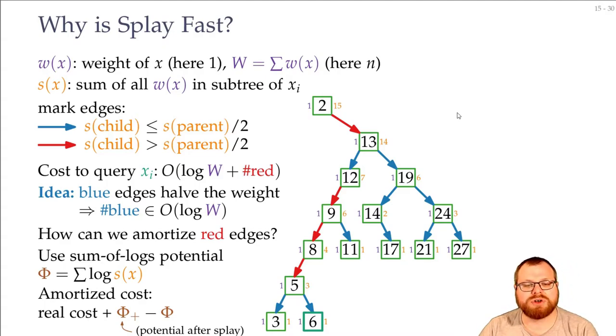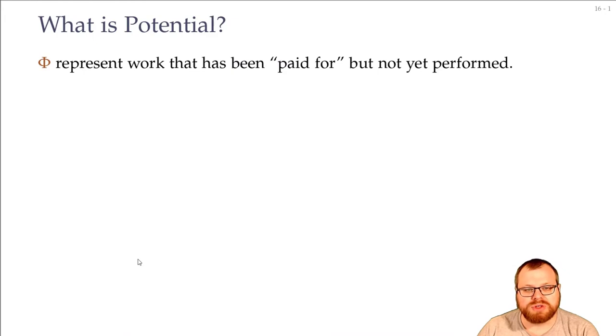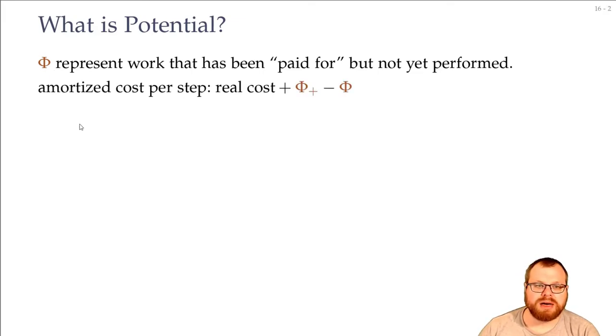So if you haven't heard of potential functions before, or it has been a long time, this might be a bit confusing. So let's have a look at a smaller, more intuitive example before. So this potential function represents work that has been paid for, but not yet performed. And the amortized cost per step is just the real cost, plus the change in the potential. So whenever we pay a lot, but the potential goes down, then the amortized cost is low. If we pay little, then we can increase the potential to still stay inside the amortized cost.